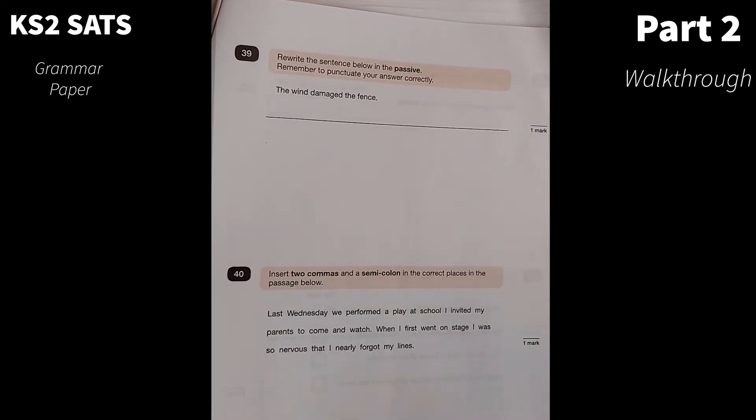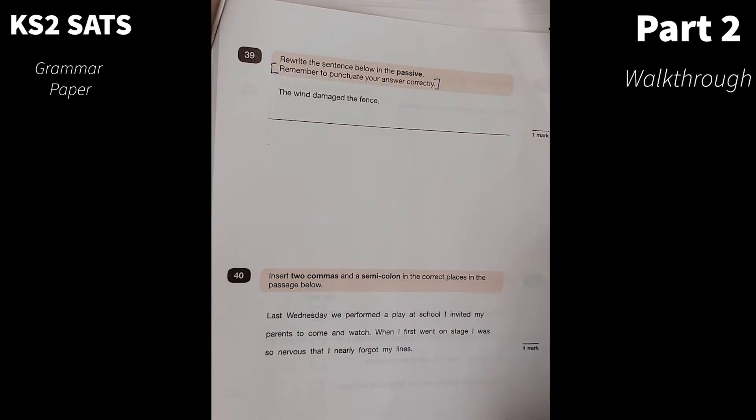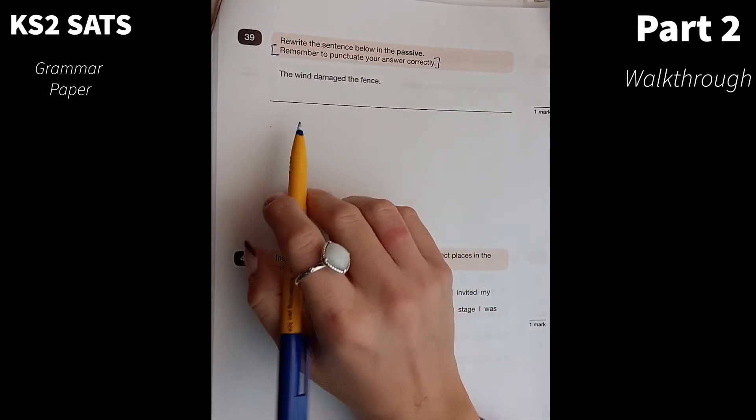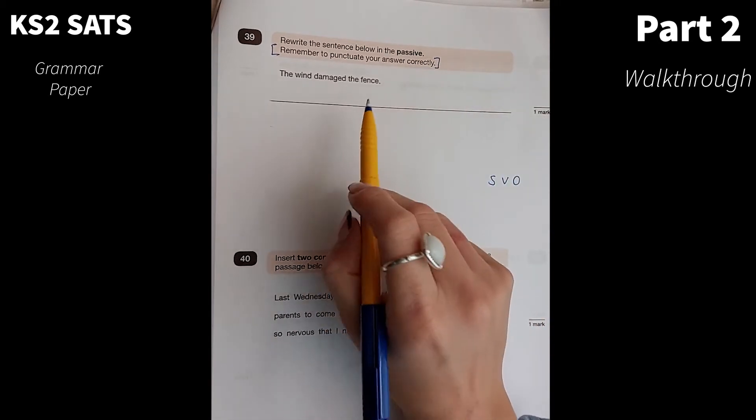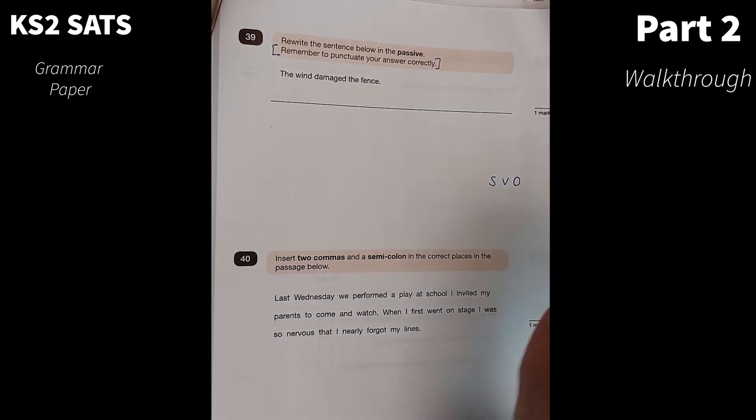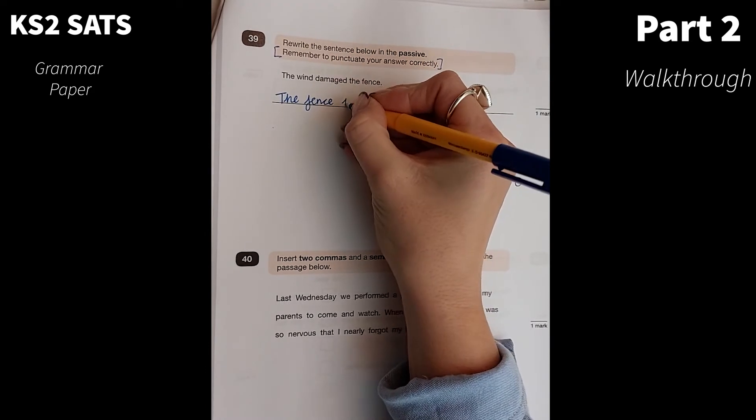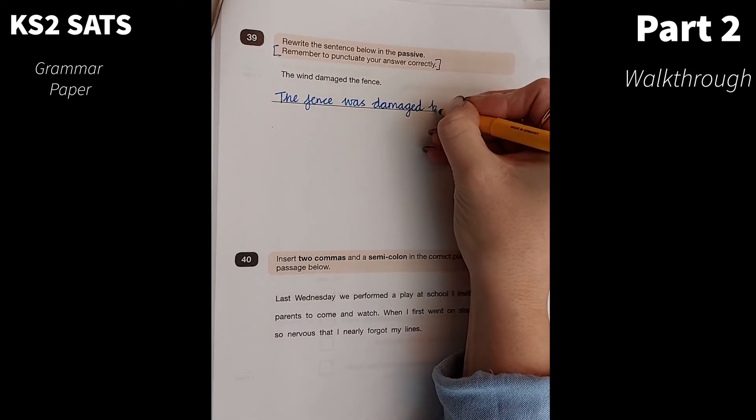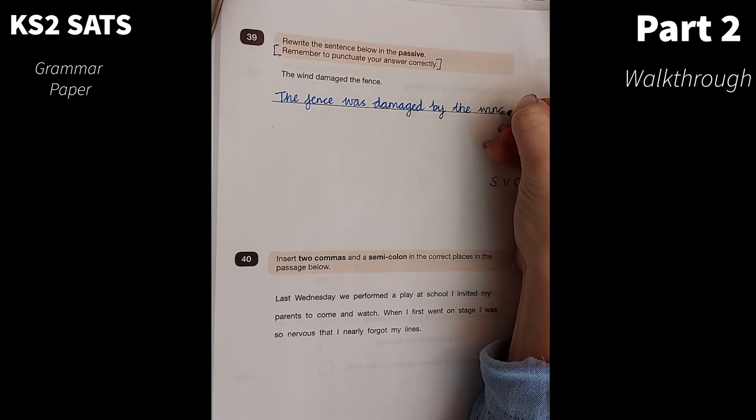Number 39. Rewrite the sentence below in the passive. Remember to punctuate your answer correctly. And for me, that is the biggest thing. You see so many people losing out on marks because they forgot a capital letter, they've forgotten a full stop. The wind damaged the fence. As I said before, if a sentence is in the active voice, we go subject, verb, object. But when we look at the passive, the object becomes the focus of the sentence. I would change this to the fence. And I remember my capital letter. The fence was damaged by. You can usually tell sentences in the passive by that word by. The fence was damaged by the wind. And I must remember my full stop.